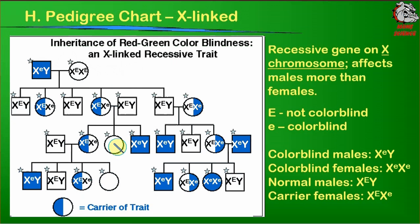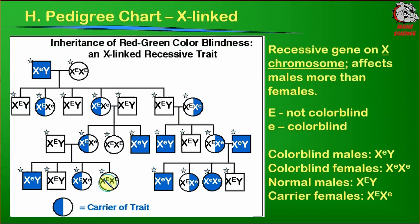The same logic applies to the individual in the middle. She has to get X big E from dad, so we know the daughter gets X big E from him. The question is whether the mother gives X big E or X little e. Since this chart tells us who the carriers are and she's not listed as a carrier, she's X big E, X big E. The same reasoning applies to the daughter from that coupling: the father gives X big E, and since the mother isn't called a carrier, she must be X big E. But without carriers indicated, we wouldn't actually know what those three females are.